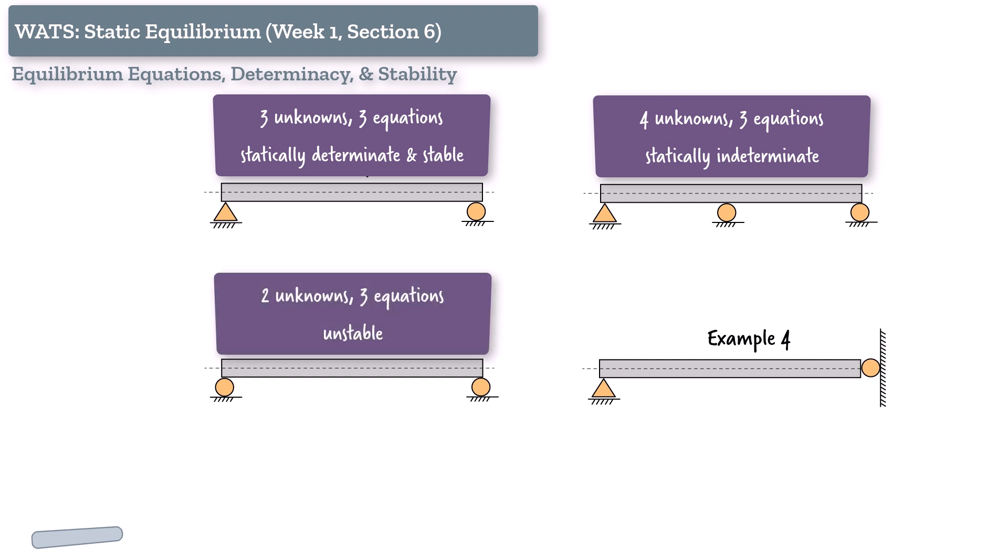In example three, we had two rollers, just two unknowns, but three equations. At first glance, it looked like we the problem had a solution. But the structure turned out to be unstable, because it couldn't resist forces in all directions. And that's a critical point.